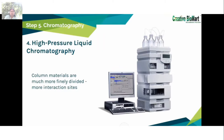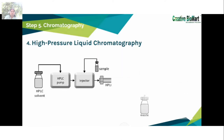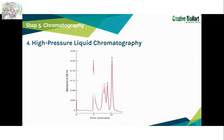High Pressure Liquid Chromatography (HPLC) can substantially improve the resolving power of all column techniques. The column materials are much more finely divided, resulting in more interaction sites and greater resolving power. The sample is loaded into the column and moves through the stationary phase under pressure. Different materials have different affinity with the stationary phase, so they leave the column at different times. A detector obtains various peak signals — each peak represents a different compound — and after comparing these signals, we know the material contained in the sample, giving high resolution and rapid separation.